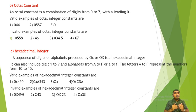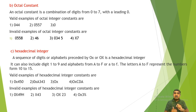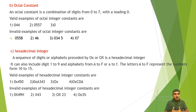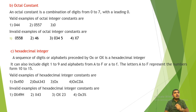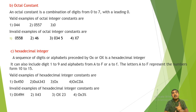Invalid examples of octal integer constants: first, 0558 — invalid because 8 is greater than 7, which is not allowed. Second, 46 — invalid because it does not have a leading 0. Third, 034 5 (with a blank space) — invalid because blank space is not allowed. Fourth, x7 — invalid because 'x' as a character prefix is not allowed in octal notation.